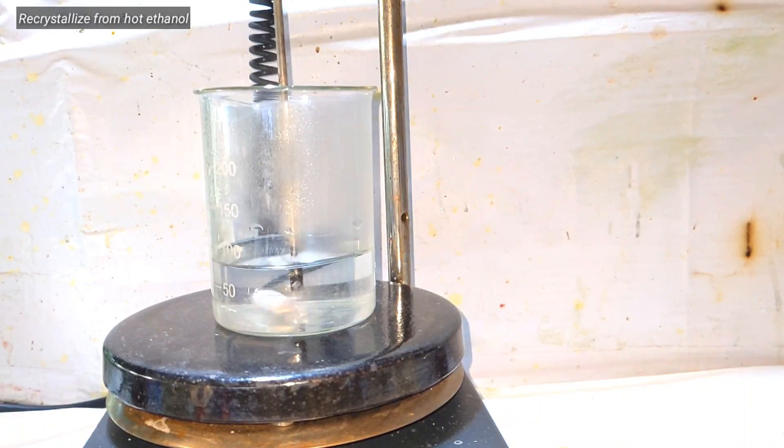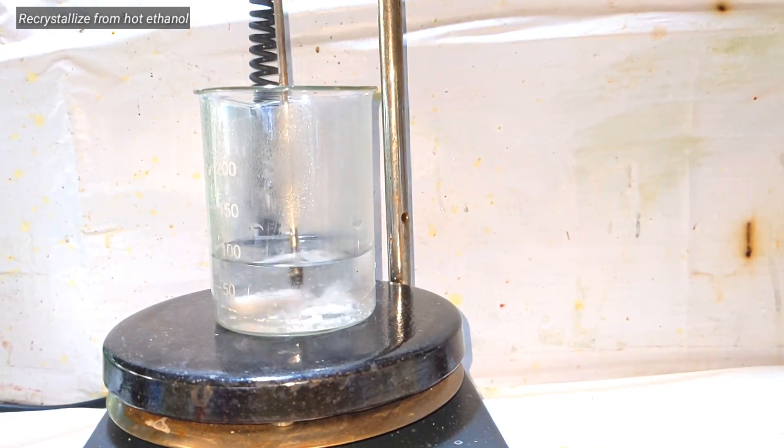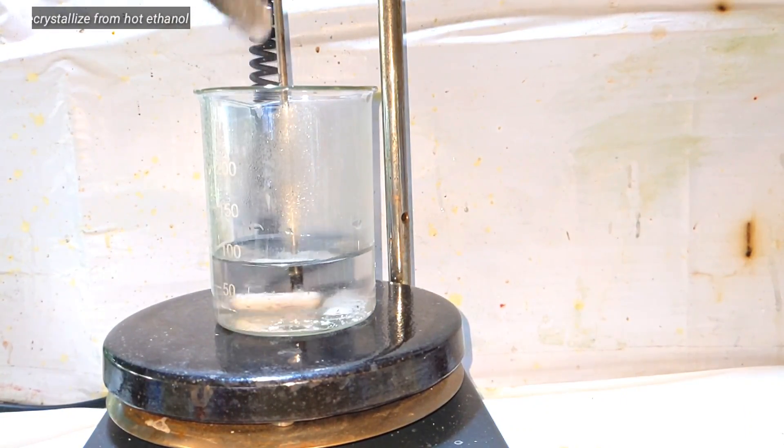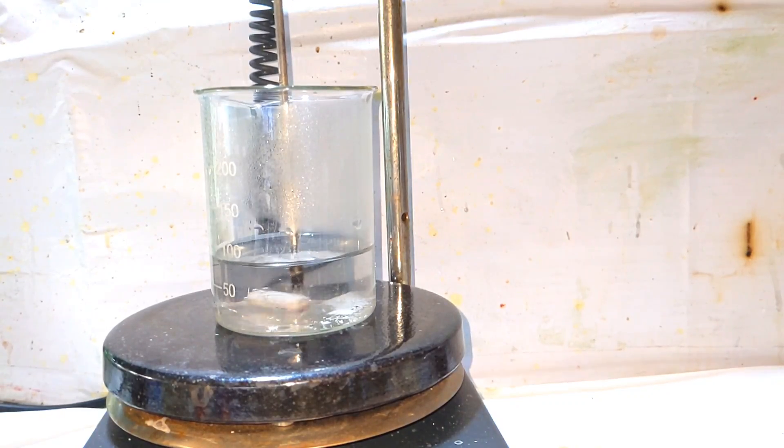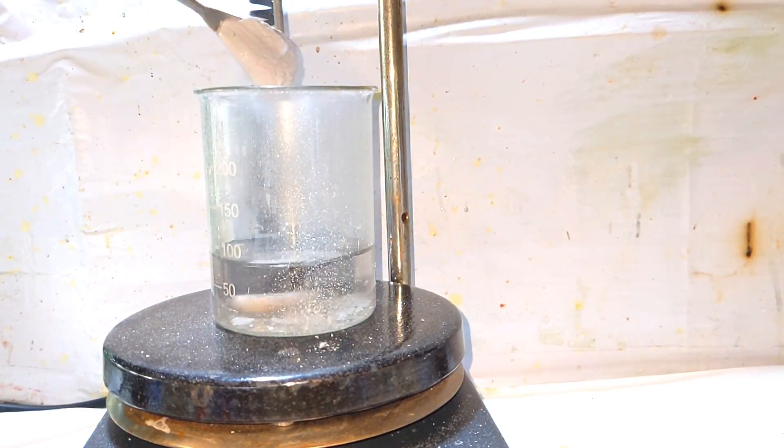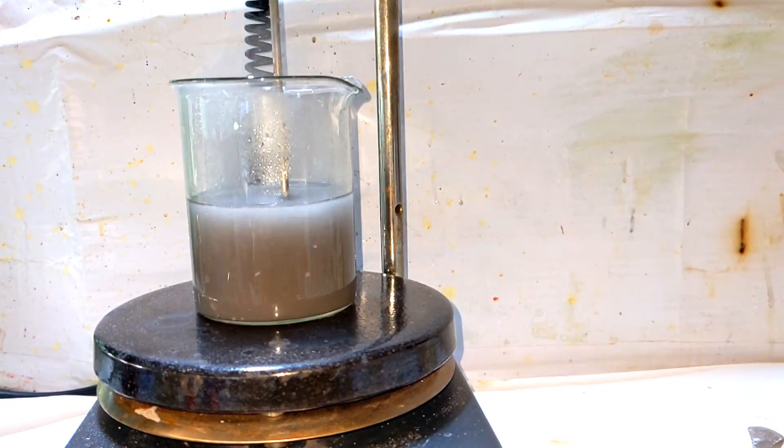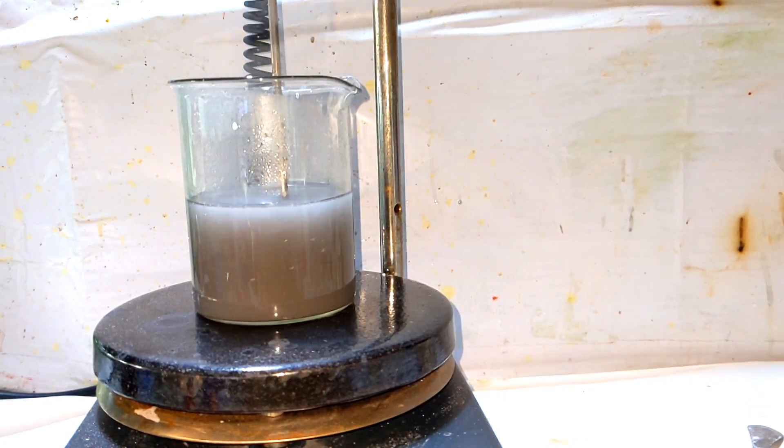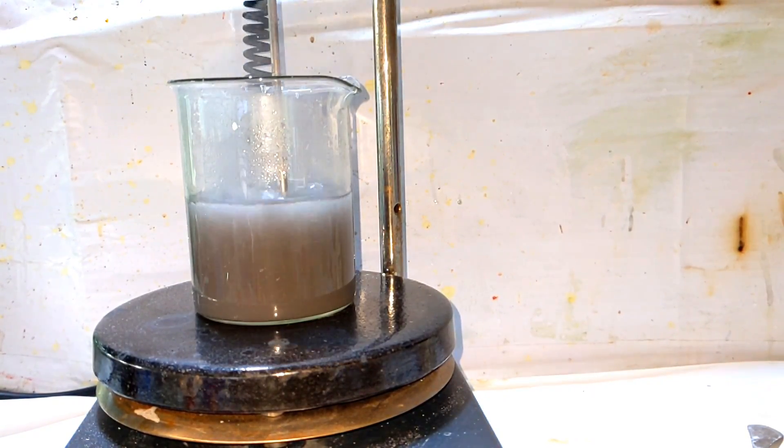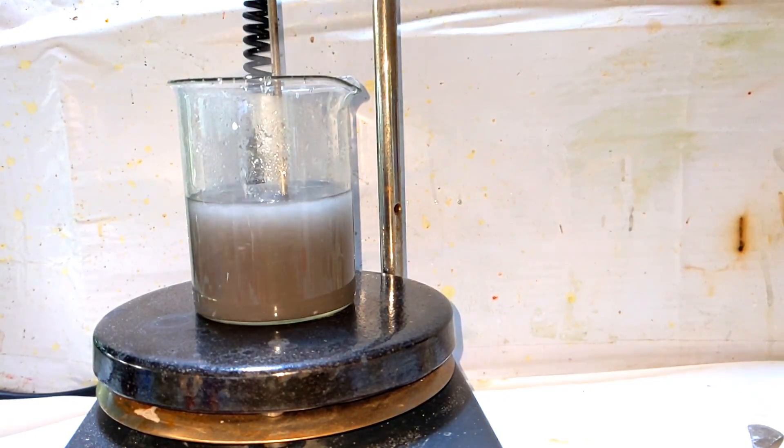So now it's time to recrystallize. 75 milliliters of ethyl alcohol was heated to boil and the crude sulfanilic acid was dissolved in it. After complete dissolution, the contents of the beaker turned black. Then we let the flask cool down.